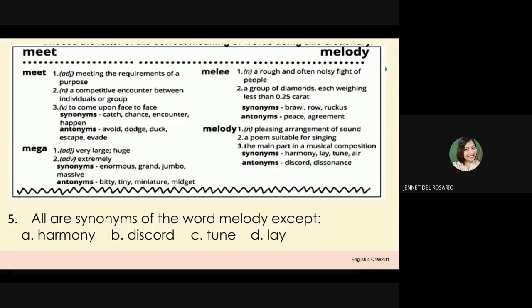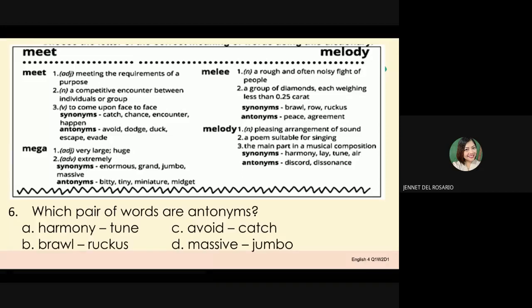Number 5: All are synonyms of the word melody except — A. Harmony. B. Discord. C. Tune. D. Lay. Number 6: Which pair of words are antonyms? A. Harmony and Tune. B. Brawl and Raucous. C. Avoid and Catch. D. Massive and Jumbo.